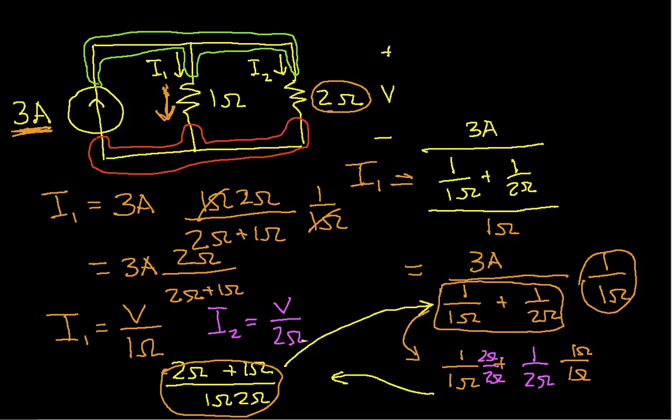So that's a very handy result. In this case, we can have I1 will be, I don't know why, but I find current division harder than voltage division. So it's 2 ohms over 2 ohms plus 1 ohm times 3 amps, which in this case turns out to be 2 amps.